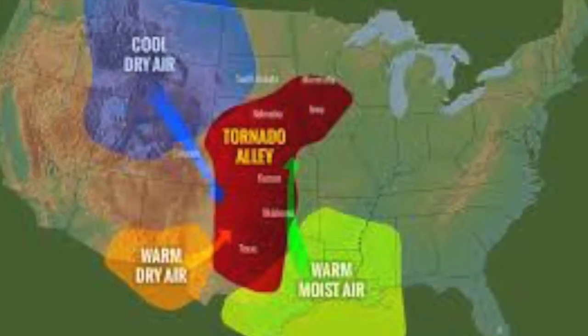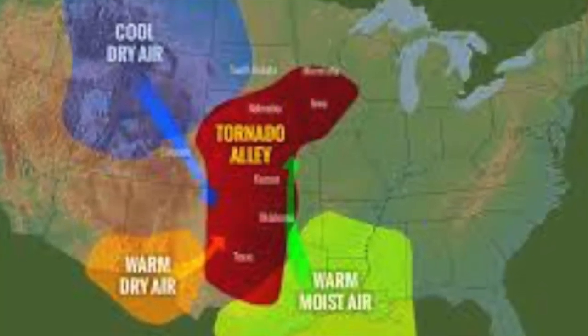This natural disaster occurs in an area known as Tornado Valley. The storm occurs when dry, cold air moving south from Canada meets with warm, moist air traveling north from the Gulf of Mexico. It occurs mostly in spring and summer.